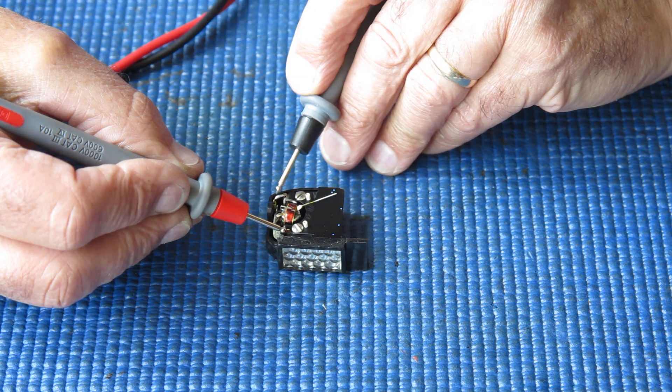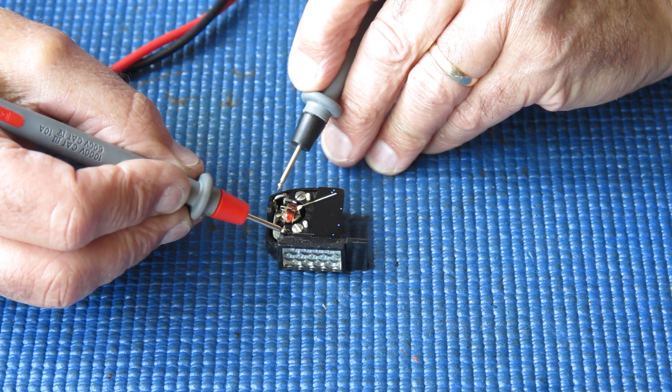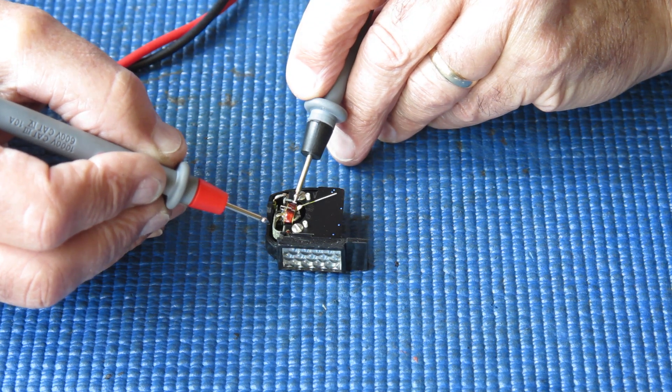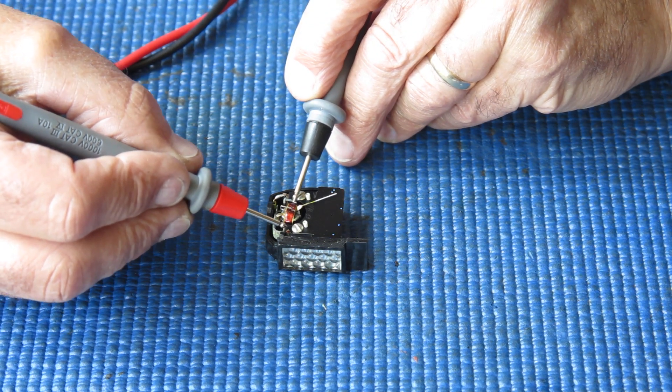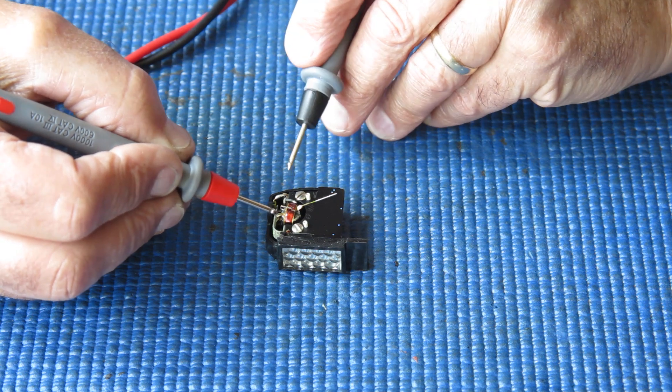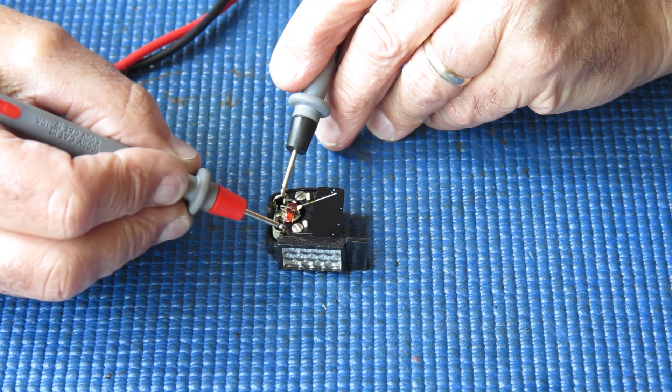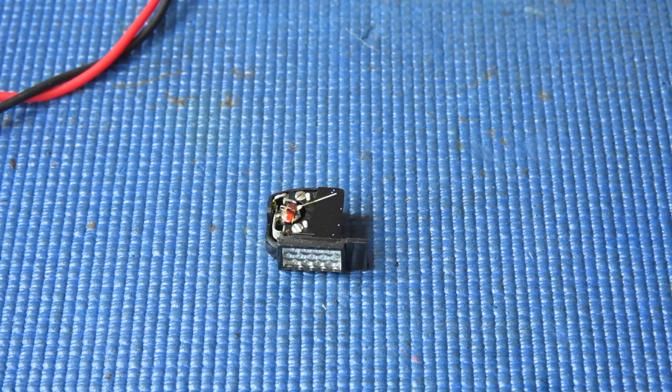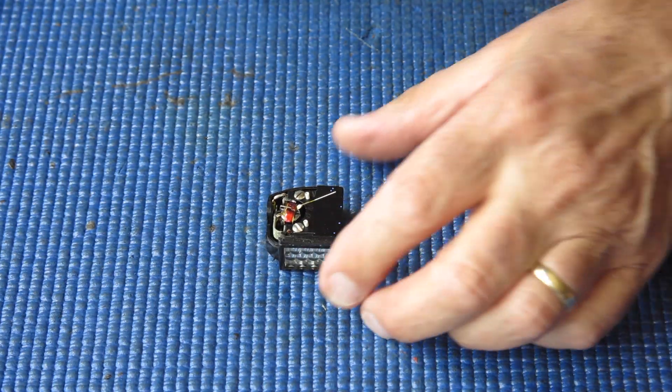And if the meter movement had been good, the movement would have immediately just disappeared straight across there. There appears to be no action at all. That's completely open circuit. That means that the movement has expired.